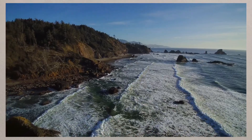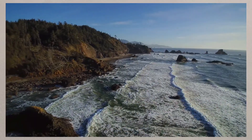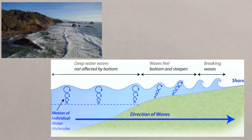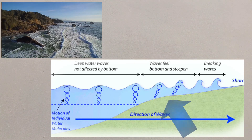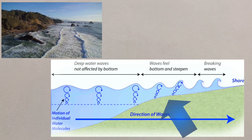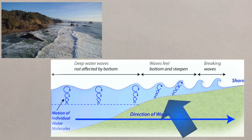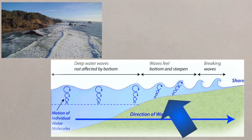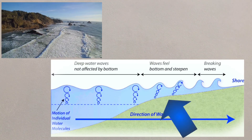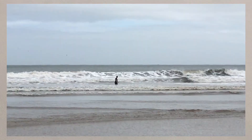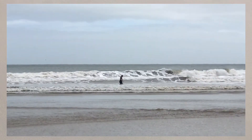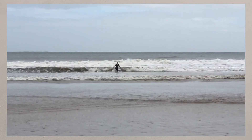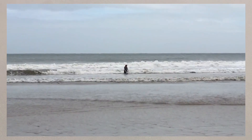As waves approach the shore, the seabed starts to interrupt their circular movement. Friction with the seabed starts to slow the base of the wave, whilst the top continues. This turns the movement from circular to elliptical. Through slowing the base of the wave, the top of the crest will rise and then break onto the beach.